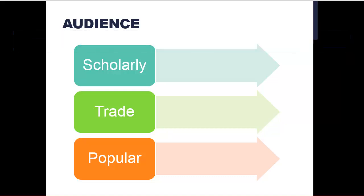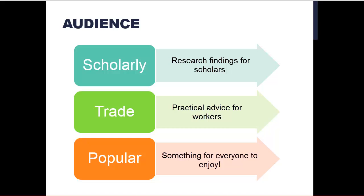The shortest explanation I can give is that scholarly sources are usually research findings and are written for scholars and other students. Trade sources are usually practical advice for people working in a specific field. And popular sources are not written for workers or scholars. They're written for everyone to read and enjoy.